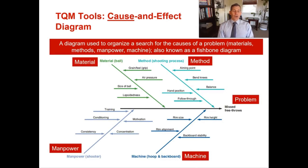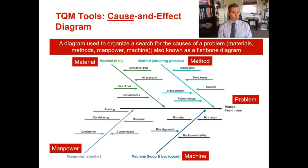The next tool is a cause and effect diagram, also known as a fishbone diagram because it looks like a fishbone. It's a diagram used to organize a search for the causes of a problem. The causes are grouped into four categories: materials, methods, manpower, and machines — all starting with M.